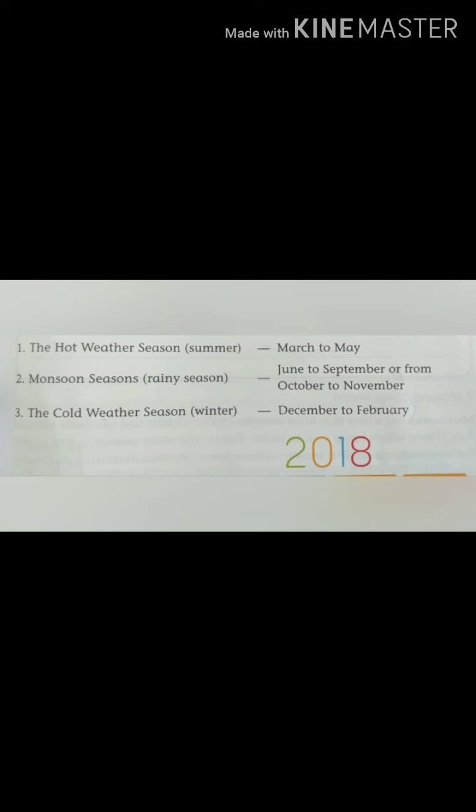There are three types of seasons. The hot weather season — summer — from March to May. The monsoon season — rainy season — from June to September, and from October to November. The cool weather season — winter — from December to February.